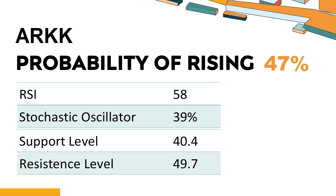The current stochastic oscillator of ARKK is 39%. It indicates that the stock is experiencing a strong downtrend and strong selling pressure. In this case, an oversold signal may indicate that a stock is hitting a temporary bottom, but it doesn't necessarily mean that the trend will reverse immediately.